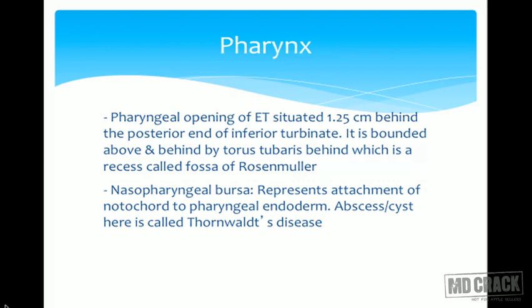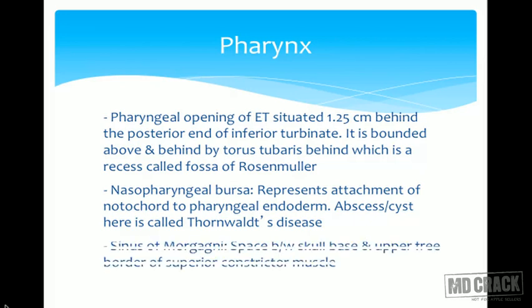The nasopharyngeal bursa represents the attachment of the notochord to the pharyngeal endoderm. An abscess or cyst here is known as Thornwaldt's disease — an important MCQ topic, sometimes also called nasopharyngeal bursitis.